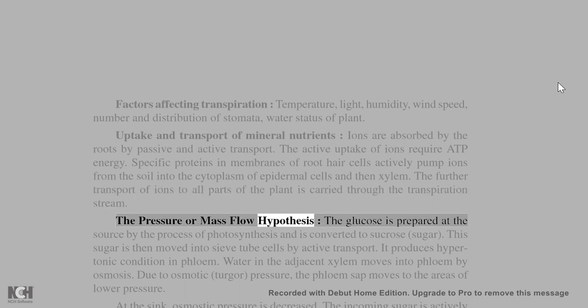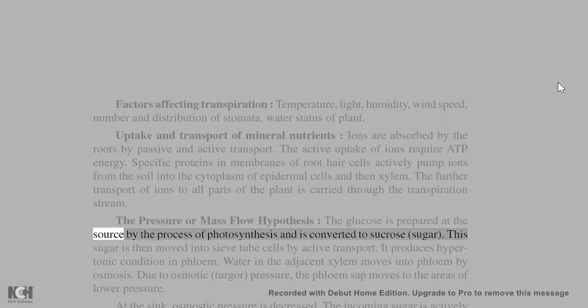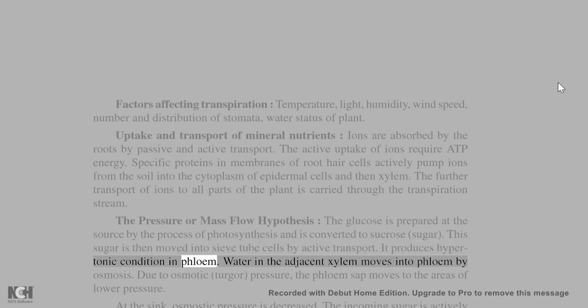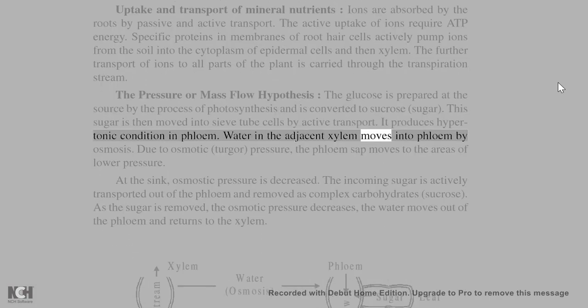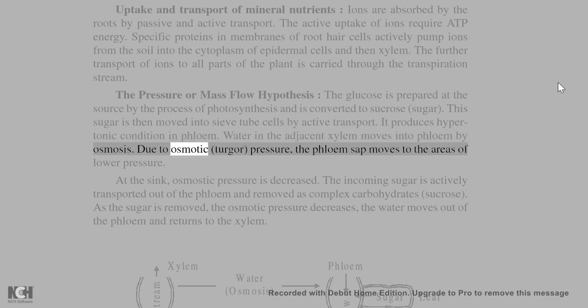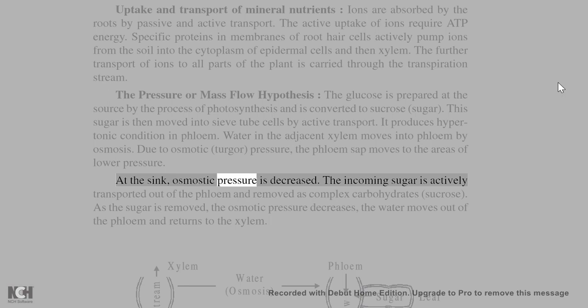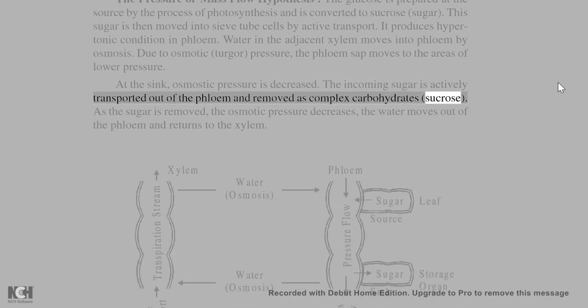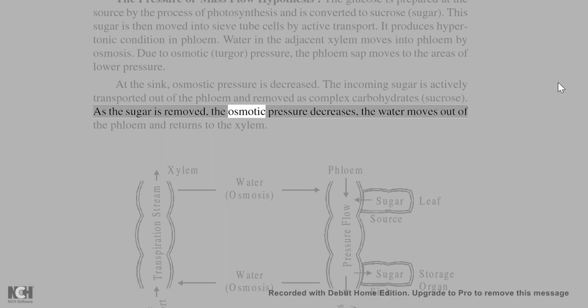The pressure or mass flow hypothesis: the glucose is prepared at the source by the process of photosynthesis and is converted to sucrose, sugar. This sugar is then moved into sieve tube cells by active transport. It produces hypertonic condition in phloem. Water in the adjacent xylem moves into phloem by osmosis. Due to osmotic turgor pressure, the phloem sap moves to the areas of lower pressure. At the sink, osmotic pressure is decreased. The incoming sugar is actively transported out of the phloem and removed as complex carbohydrates, sucrose. As the sugar is removed, the osmotic pressure decreases, the water moves out of the phloem and returns to the xylem.